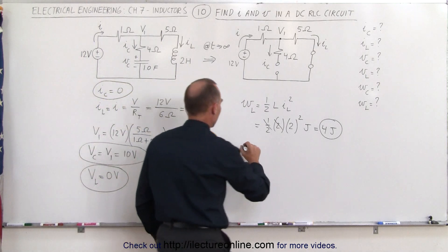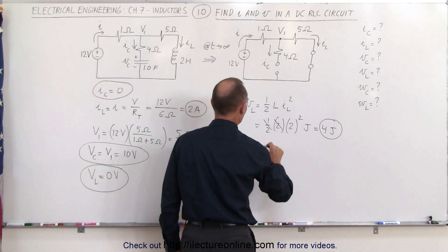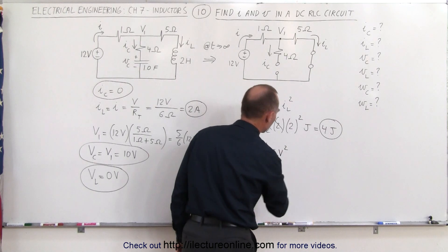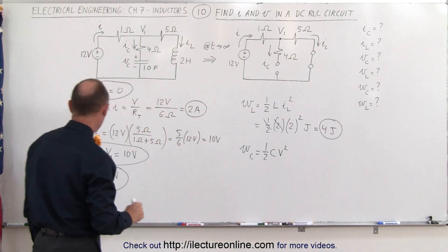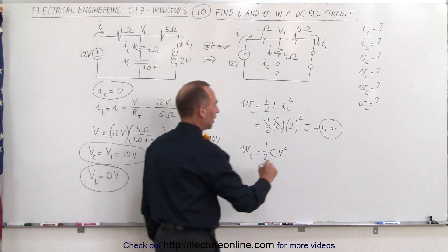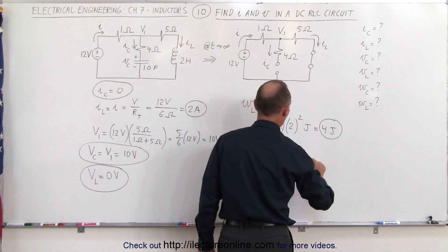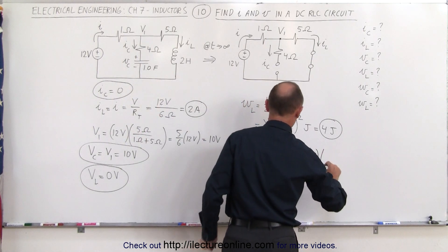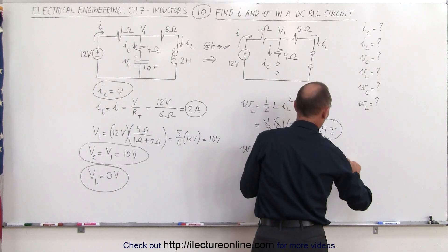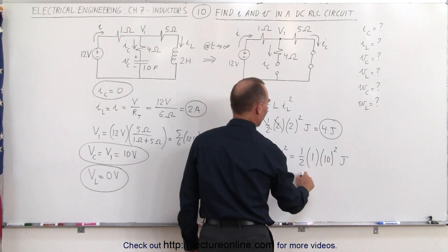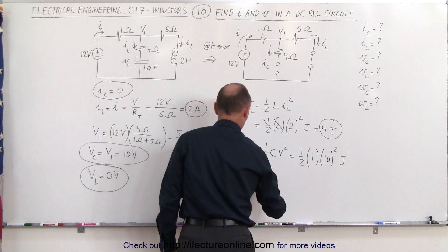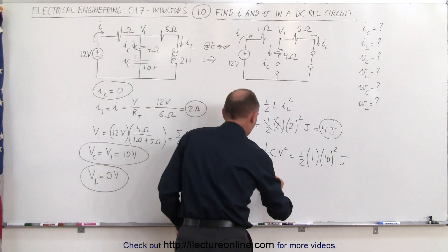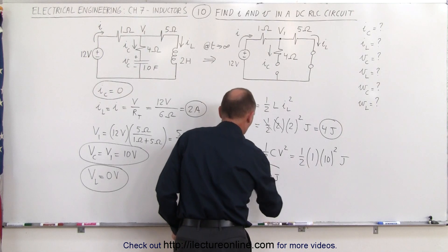The energy stored on the capacitor equals one-half times the capacitance times the voltage squared. We have one-half times 1 farad times (10 volts) squared, which is 100 divided by 2, equal to 50 joules. That's the work done to put all that charge on there — the energy stored on the capacitor.